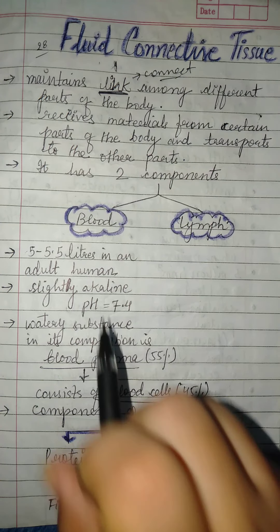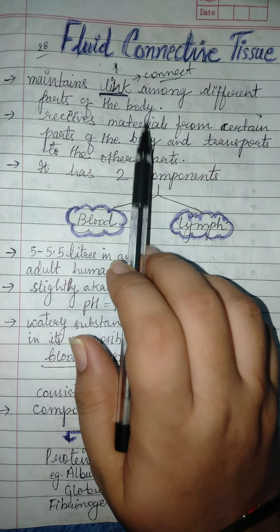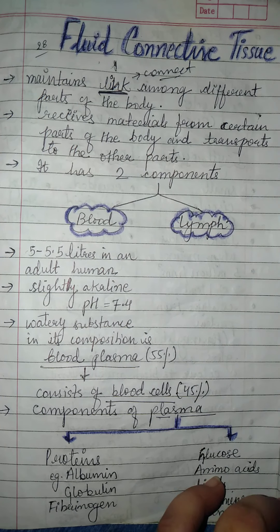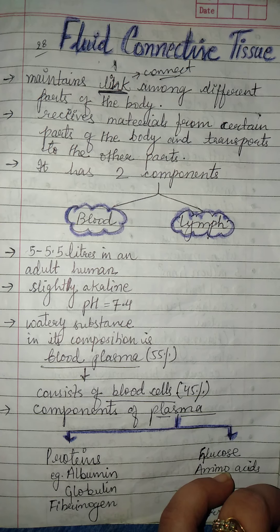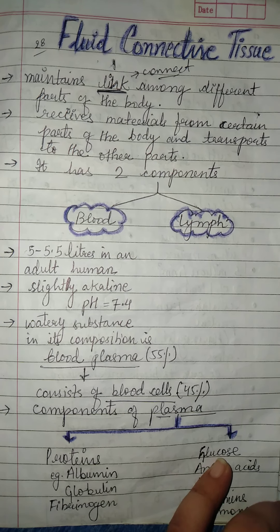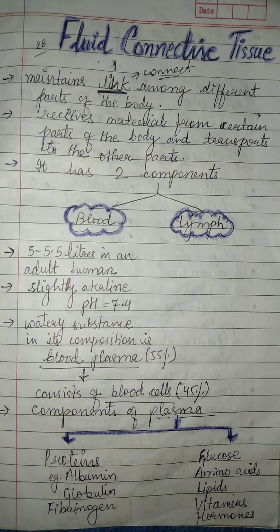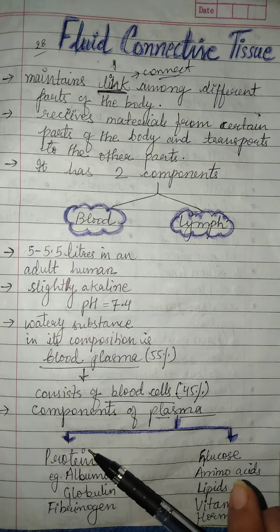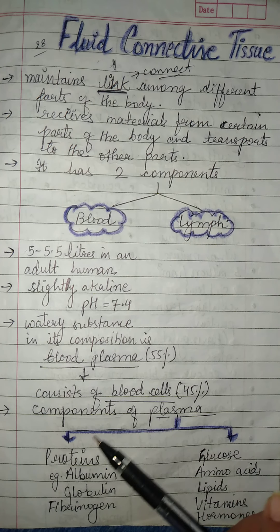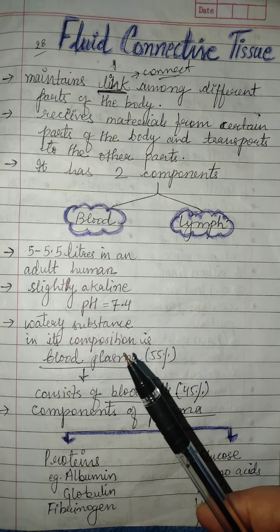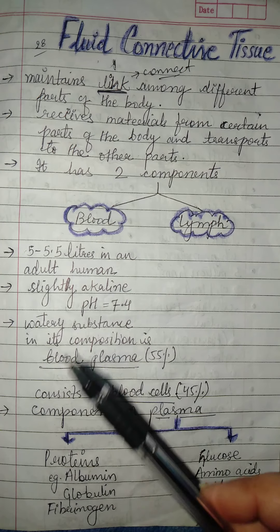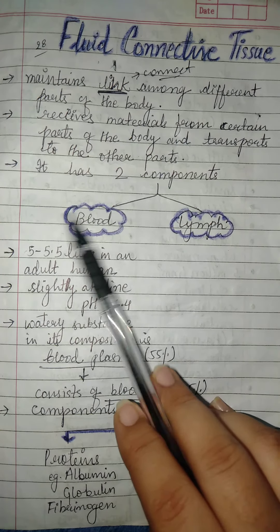It helps the body to receive material from certain parts of the body and transport it to other parts. For example, after digestion occurs in the stomach, the food we eat provides energy, and that energy is required by each and every part of the body. For energy, there will be circulation of blood — and that is why blood is also a type of connective tissue.